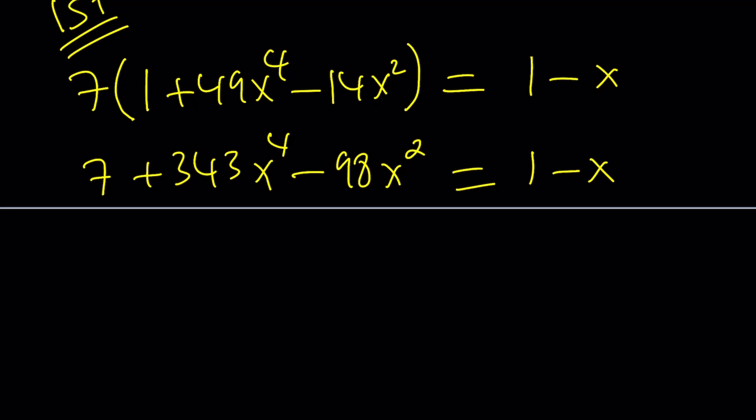Now let's go ahead and put everything on the same side. 343x to the fourth minus 98x squared plus x plus 6 equals 0. Notice that this equation does not have x cubed which is a good thing. So this is a quartic equation, actually a depressed quartic, and we're going to try to solve this.